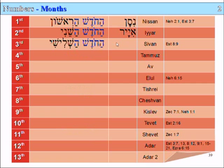The third month is Ha-Khodesh Ha-Shlishi, the month the third. And the Babylonian name is Sivan. It's during Sivan that we have the Feast of Pentecost, or Shavuot, the Feast of Weeks — 50 days or 7 weeks after the Feast of Unleavened Bread. So this is in the third month in Sivan.